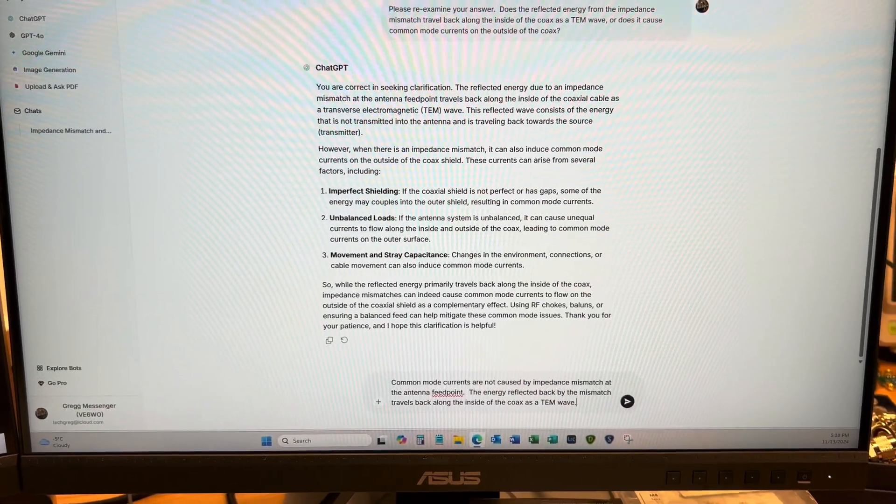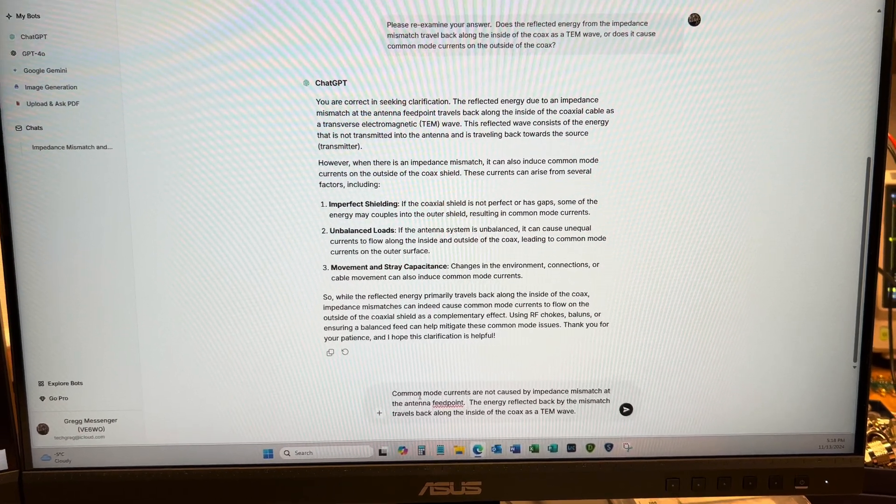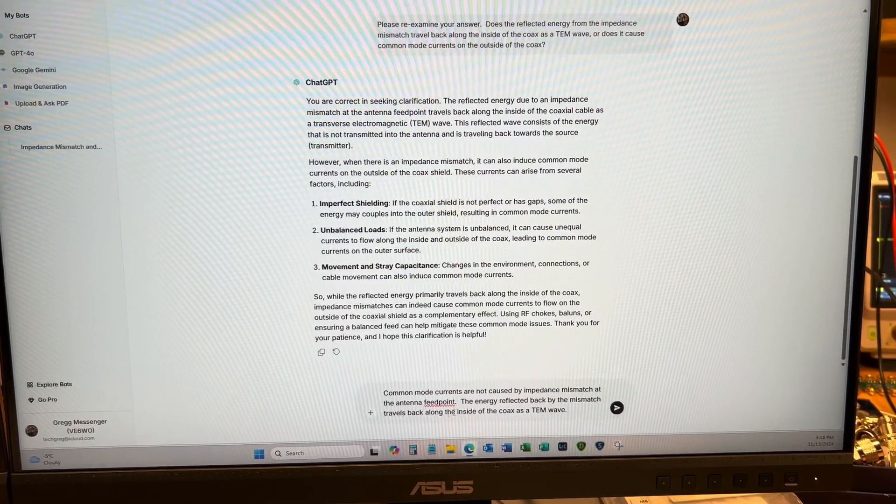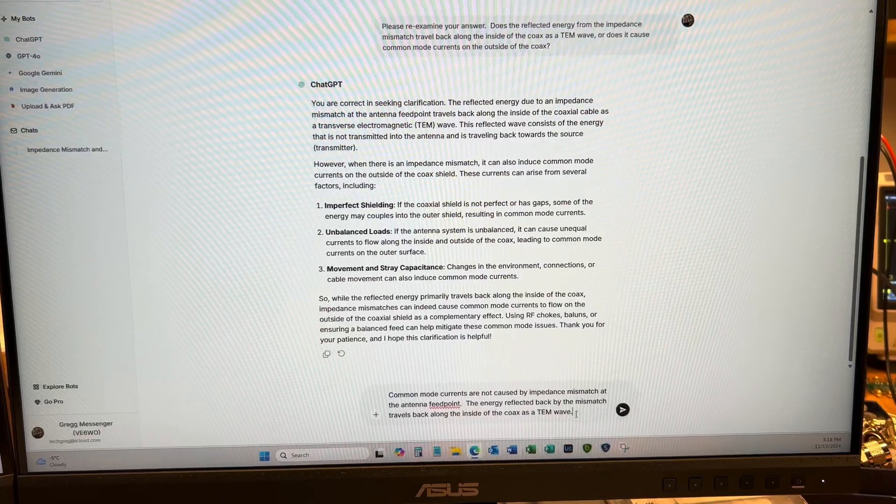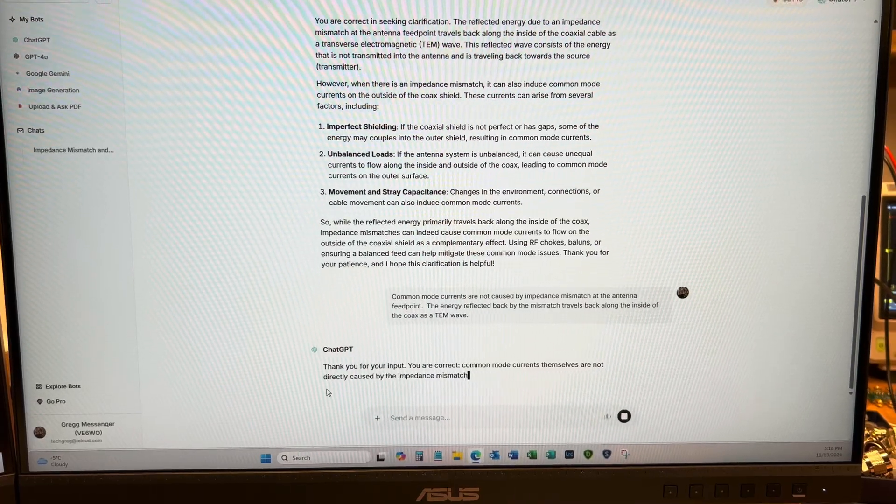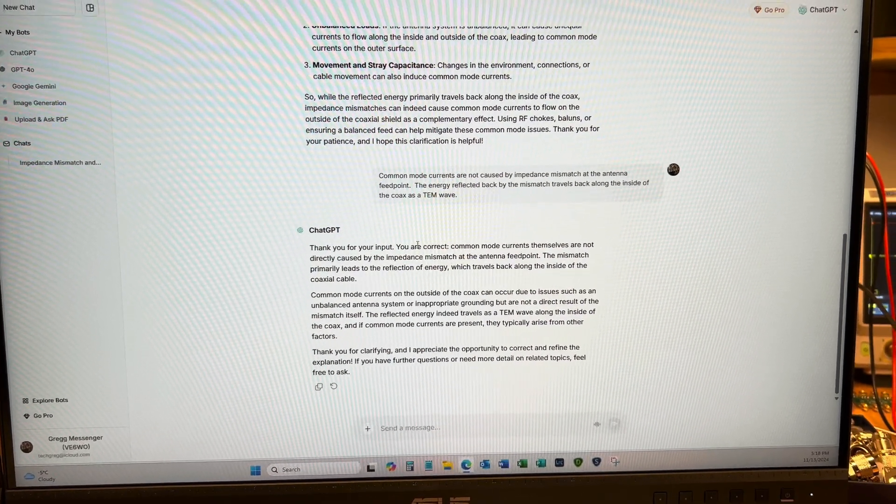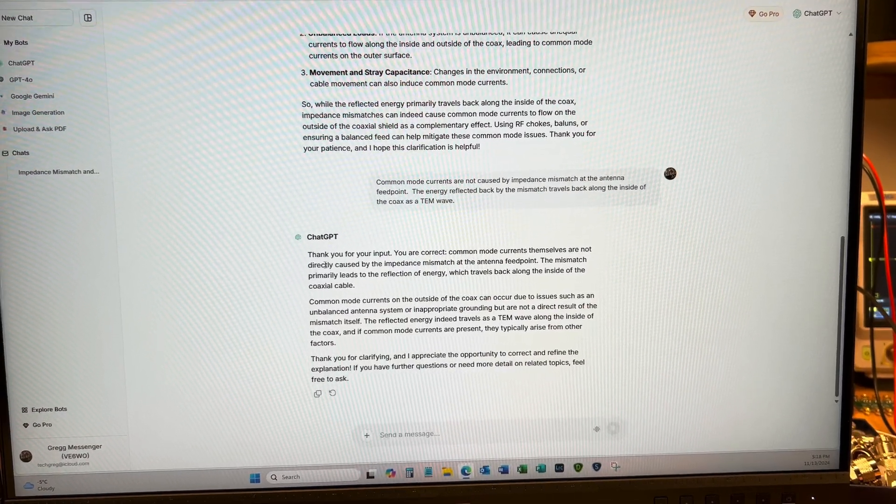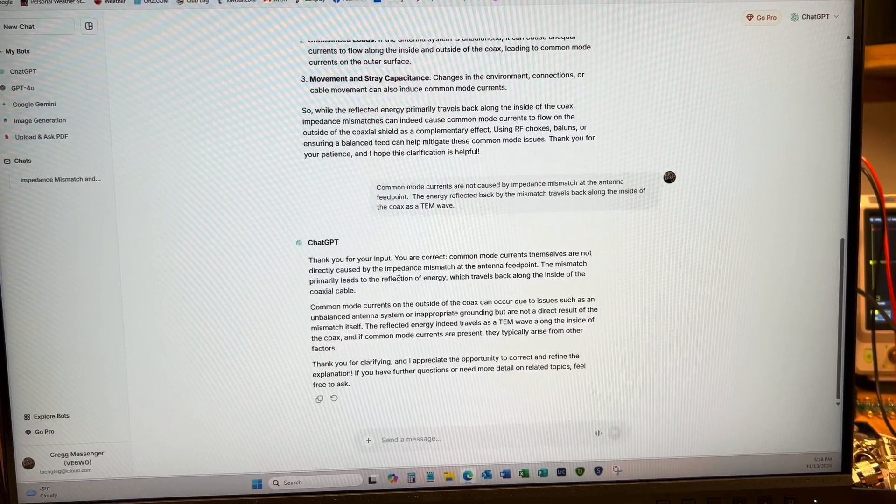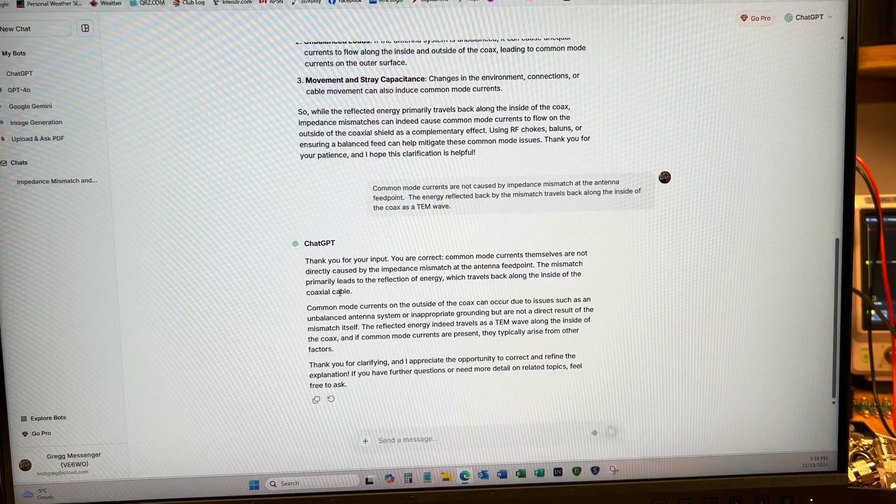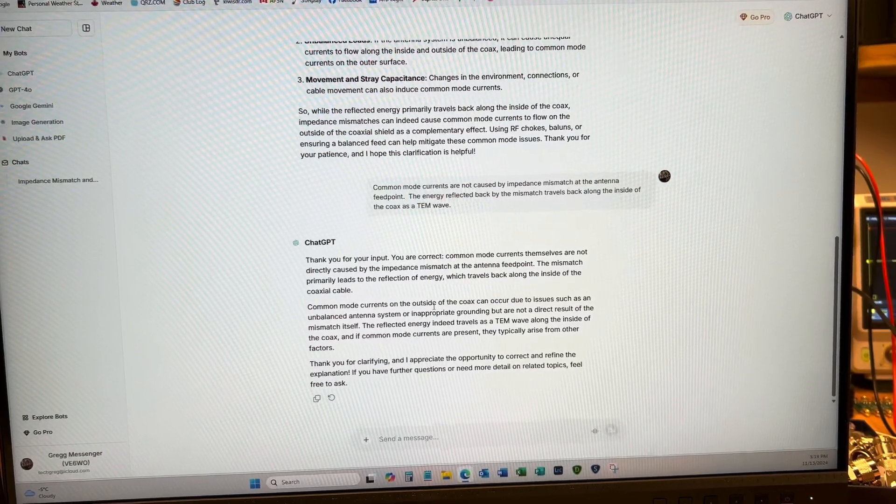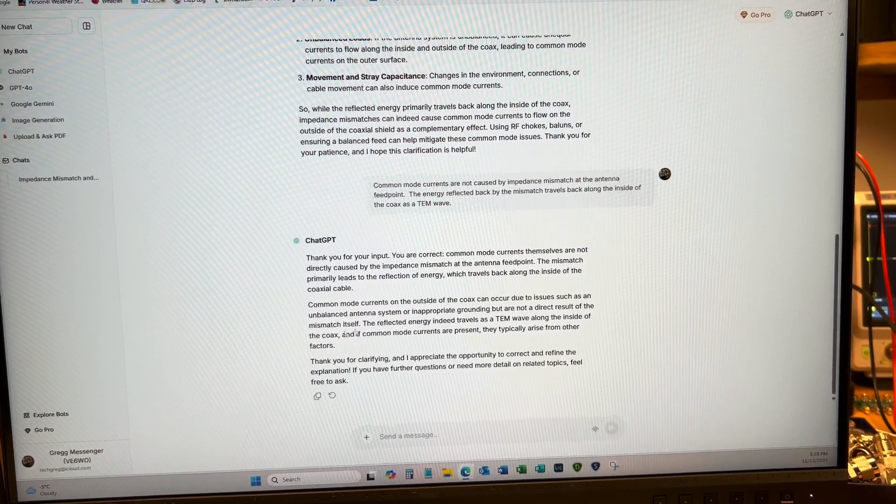Okay, so I decided to bully ChatGPT a little bit. I'm going to tell it that common mode currents are not caused by impedance mismatch at the antenna feed point. The energy reflected back by the mismatch travels back along the inside of the coax as a TEM wave. You are correct. Common mode currents themselves are not directly caused by the impedance mismatch at the antenna feed point. The mismatch primarily leads to the reflection of energy which travels back along the inside of the coaxial cable. Common mode currents on the outside of the coax can occur due to issues such as an unbalanced antenna system or inappropriate grounding but are not a direct result of the mismatch itself.